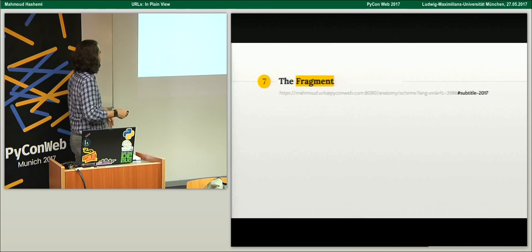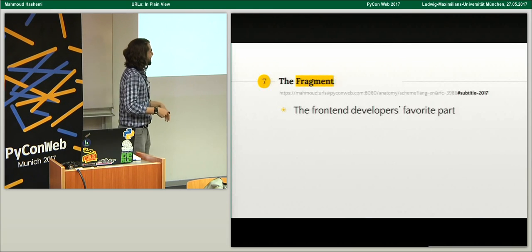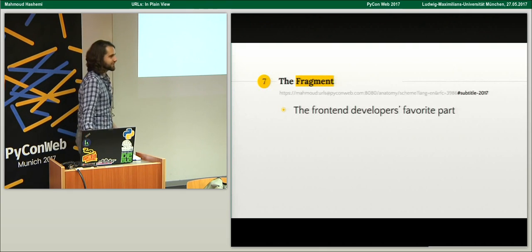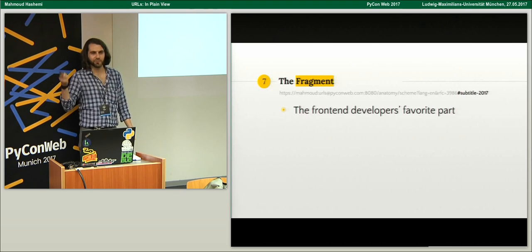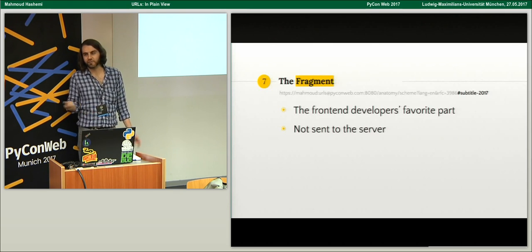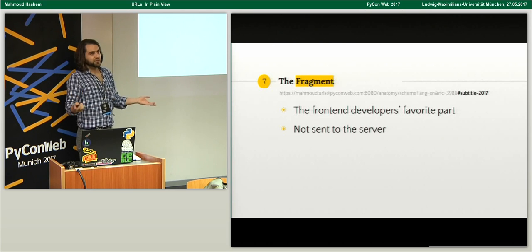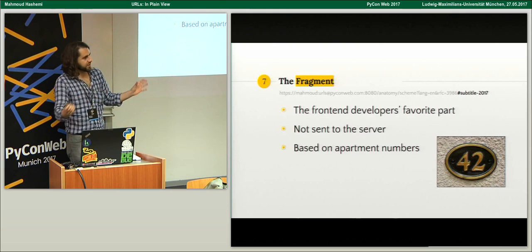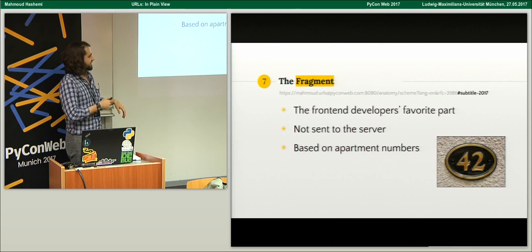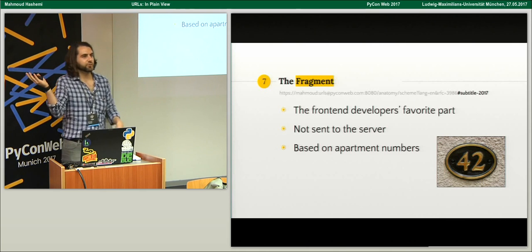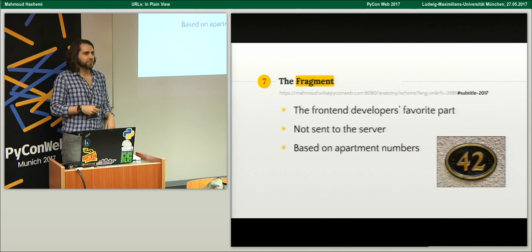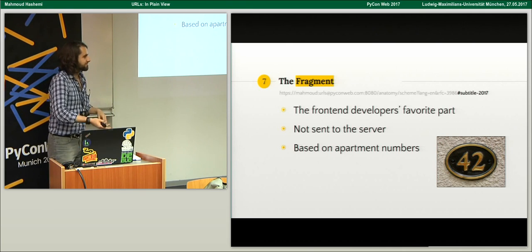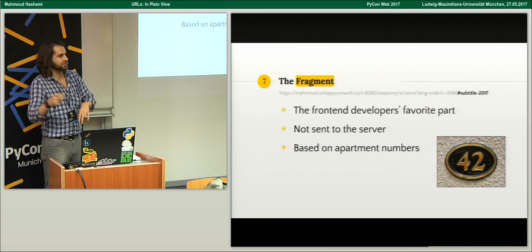Finally, we get to the fragment — the front-end developer's favorite part. You can put anything you want after there. There's no real fancy stuff that happens here, so JavaScript devs can just go nuts and put whatever they want in there, because this part isn't sent to the server in HTTP. Interestingly, Tim Berners-Lee, creator of the URL and HTTP, says they decided on the pound sign because it's based on apartment numbers — you go to a particular address and the sub-address within that usually has a number.